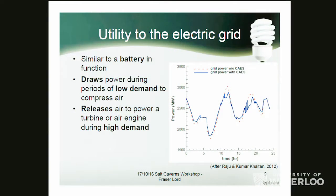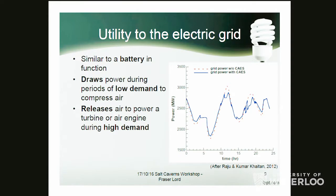In operation, CAES typically draws power during periods of low demand and releases air to power the turbines during periods of high demand — usually referred to as load shifting. This is an example of a day of operation in Huntorf's life on the power grid. You'll notice how the peak demand periods have been cut off by using CAES to generate power, and the trough periods have increased demand, allowing much better use of our baseload power.